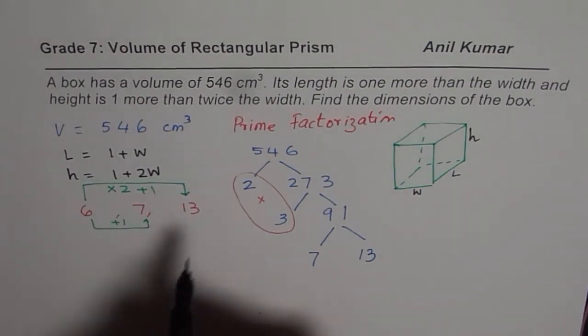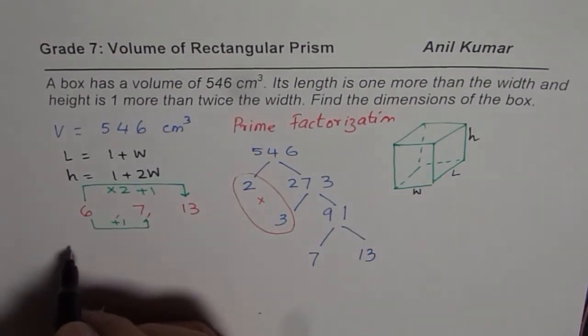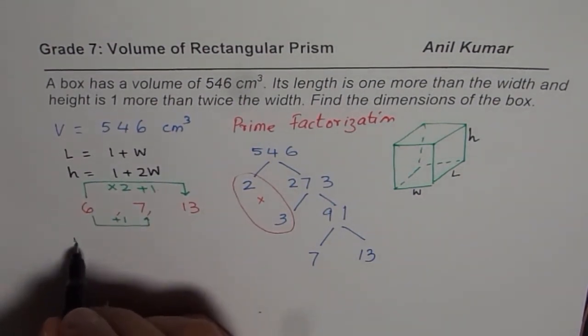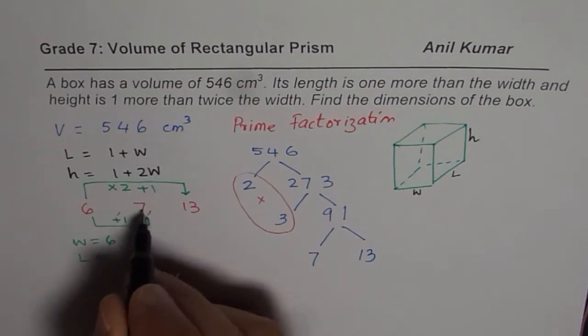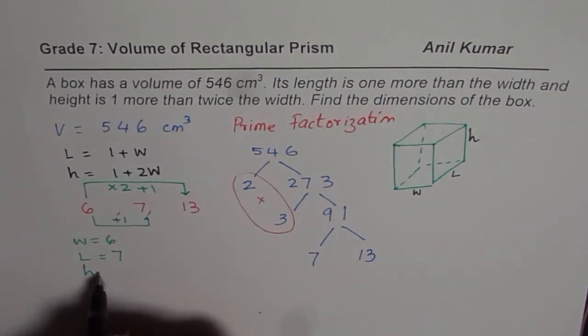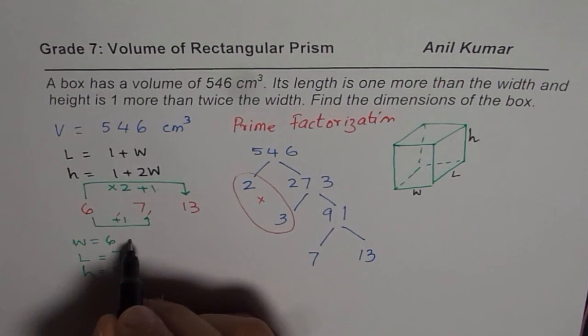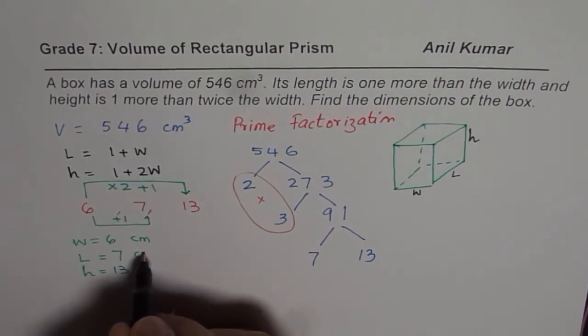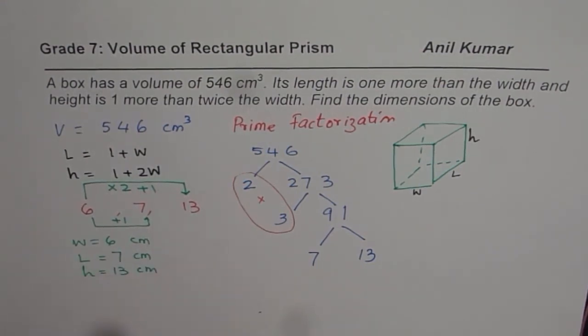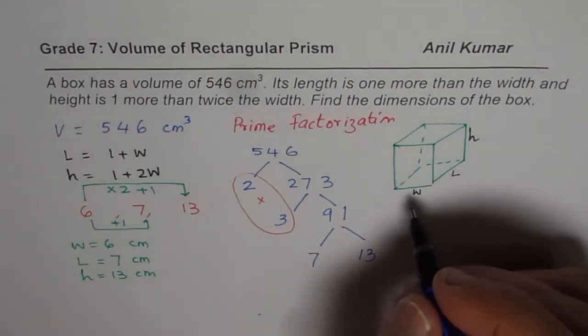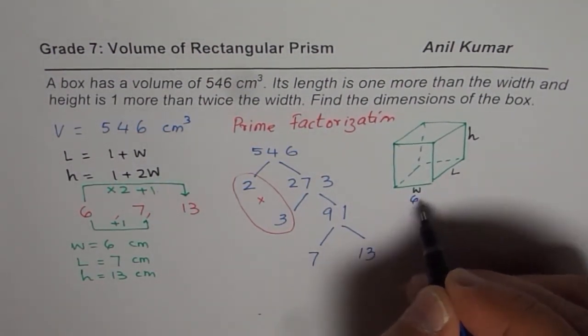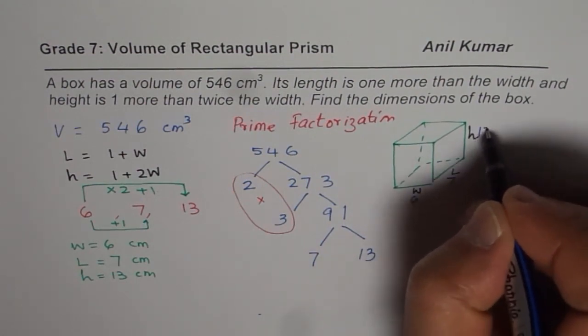And therefore, we can say that the dimensions are that width is equal to 6 cm, length is equal to 7 cm, and height is equal to 13 cm. All units are in centimeters, because the volume given to us is in centimeter cube. So that is how we can actually solve this question. So the dimensions are 6, 7, and 13.